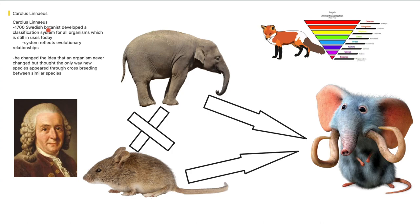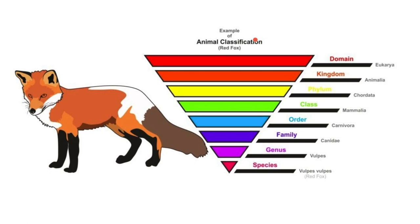He was a 17th century Swedish botanist who developed a classification system that's still used today. It reflects a little bit of evolution. You have the domain, the kingdom, the phylum, the class, the order, the family, the genus, and species. We still use this thing today.